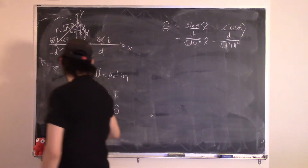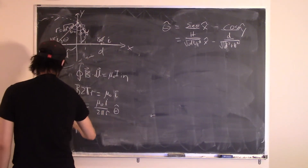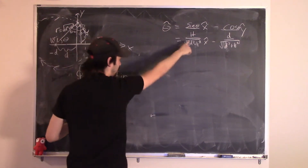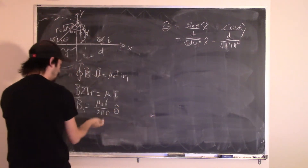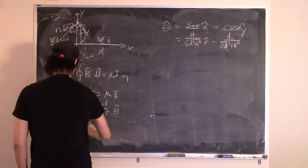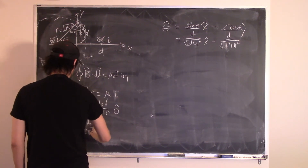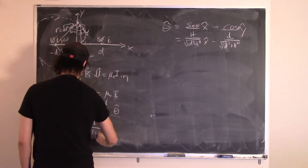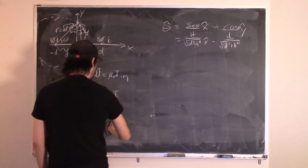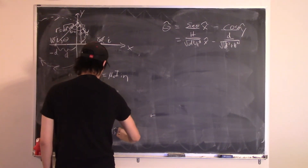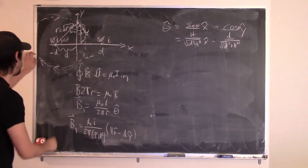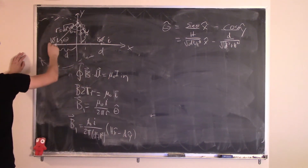Collecting the two factors of r together, B1 equals mu-naught i divided by 2π(D² + h²) times (h x-hat minus D y-hat). This is the magnetic field from the first wire.